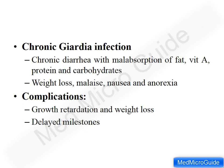The reservoir of infection is man, but dogs, beavers, and other animals act as possible reservoirs. Contaminated water is the source of infection and the feco-oral route is the most common mode of transmission. Rarely, oral-anal sexual contact can transmit the infection. The infective dose can be as low as ten cysts to initiate disease.